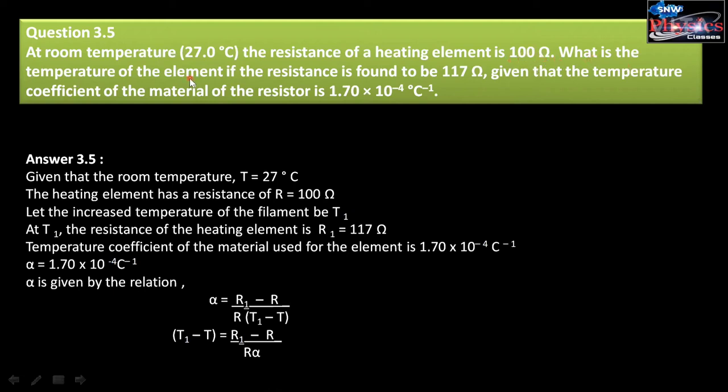What is the temperature of the element if the resistance is found to be 117 Ohm? Because of the heat, the resistance increases from 100 Ohm to 117 Ohm given that the temperature coefficient of the material is 1.70 into 10 to the power minus 4 per degree Celsius. Our temperature coefficient is the value here.